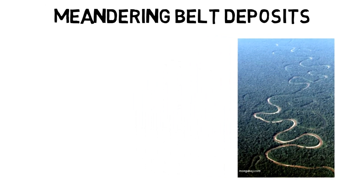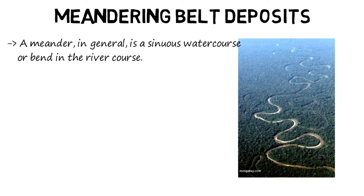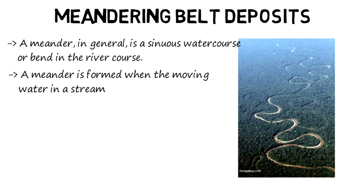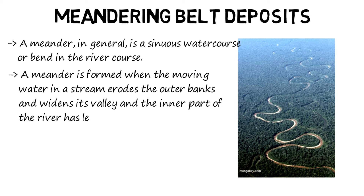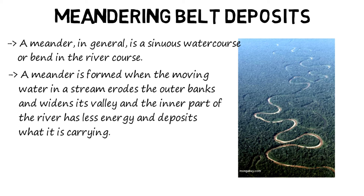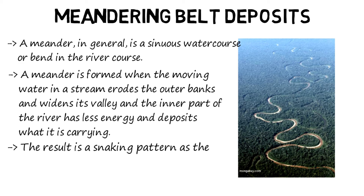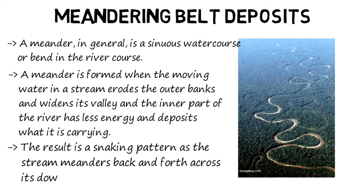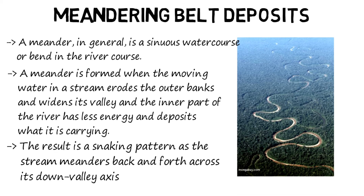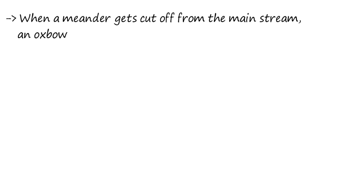Meandering belt deposits. A meander, in general, is a sinuous watercourse or bend in the river course. A meander is formed when the moving water in a stream erodes the outer banks and widens its valley, and the inner part of the river has less energy and deposits what it is carrying. The result is a snaking pattern as the stream meanders back and forth across its down-valley axis. When a meander gets cut off from the main stream, an oxbow lake is formed.